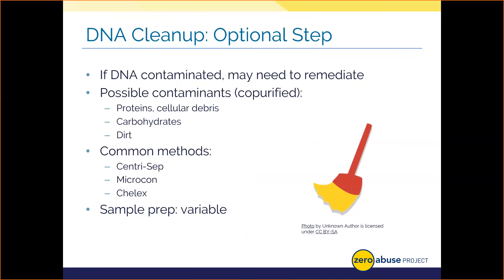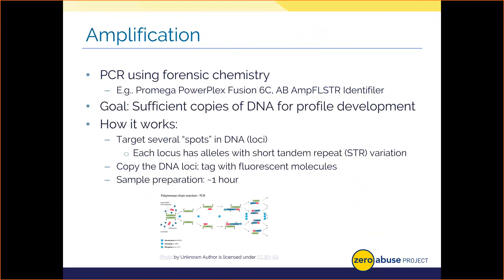Once we've done extraction and quantitated our DNA, we go to amplification — making copies of DNA so it can be used to develop a robust profile for statistical analysis and courtroom evaluation. With forensic amplification kits, we activate a molecular copy machine to make multiple copies of DNA at several loci, tagging them with light-generating dyes so we can tell all the different DNA pieces apart.